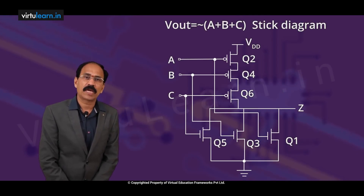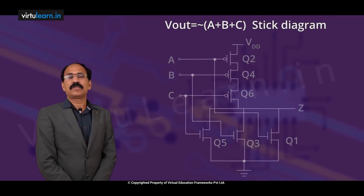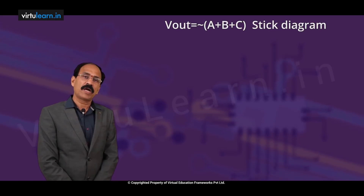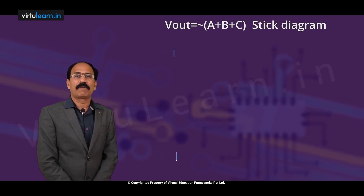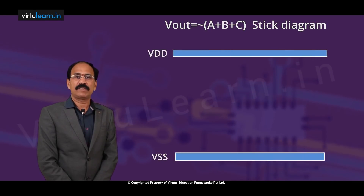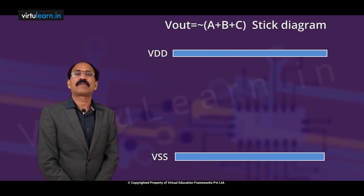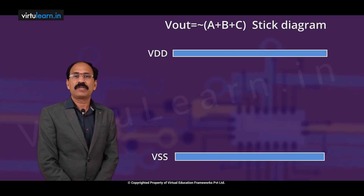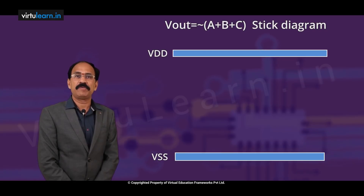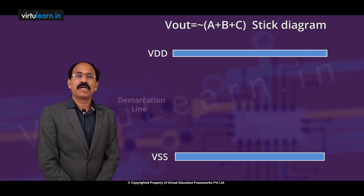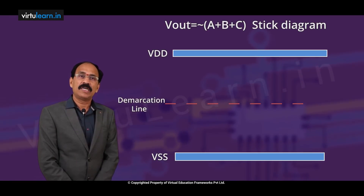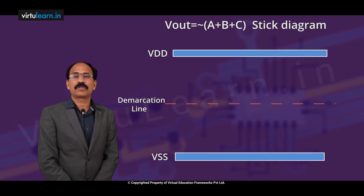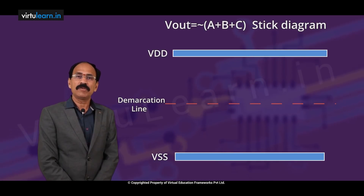Now we draw a stick diagram for this. First we draw two power rails — one is VDD, another one is ground. We take enough space between them and we draw a demarcation line at the midpoint.